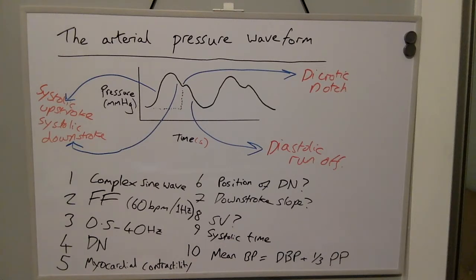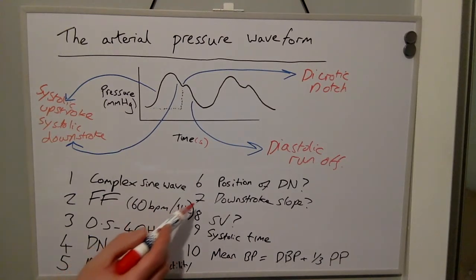The system used to measure blood pressure should be able to respond to a frequency range from 0.5 to 40 Hertz.